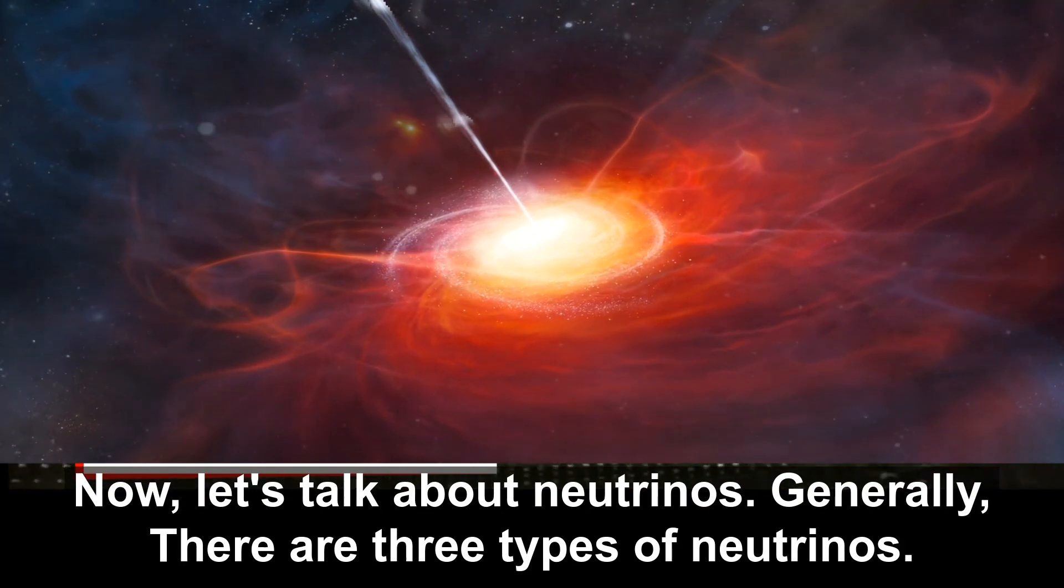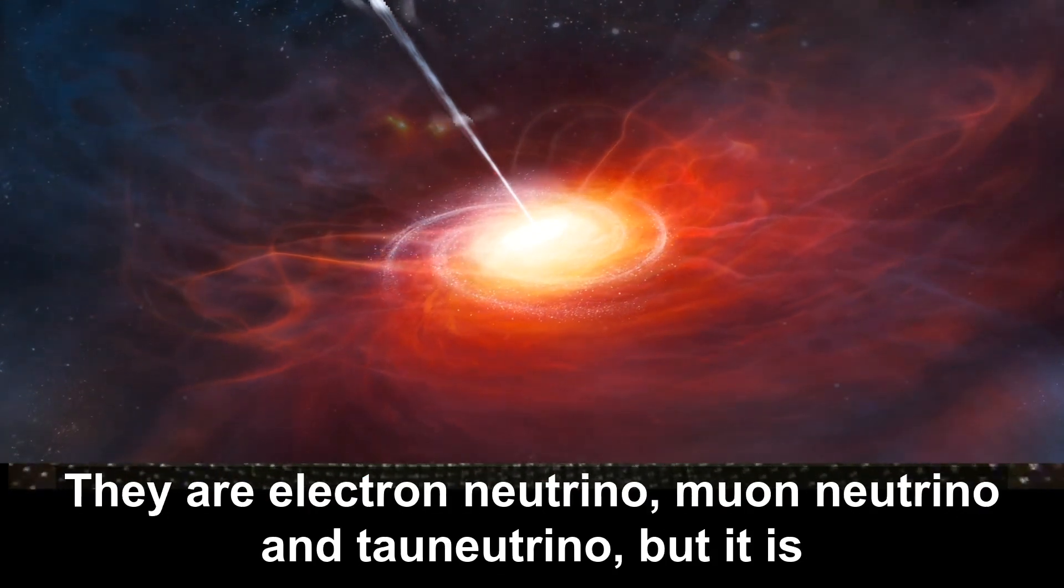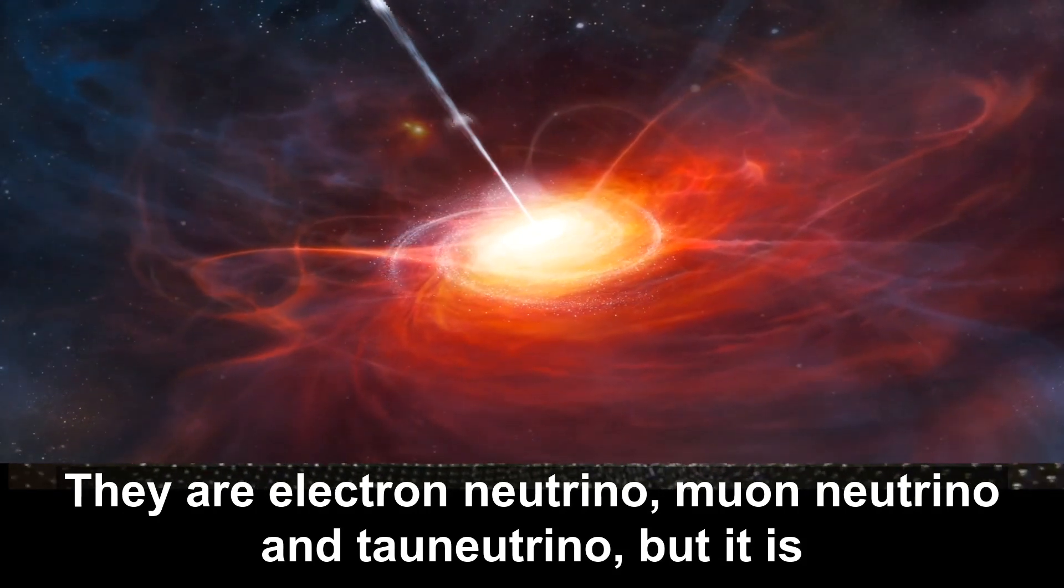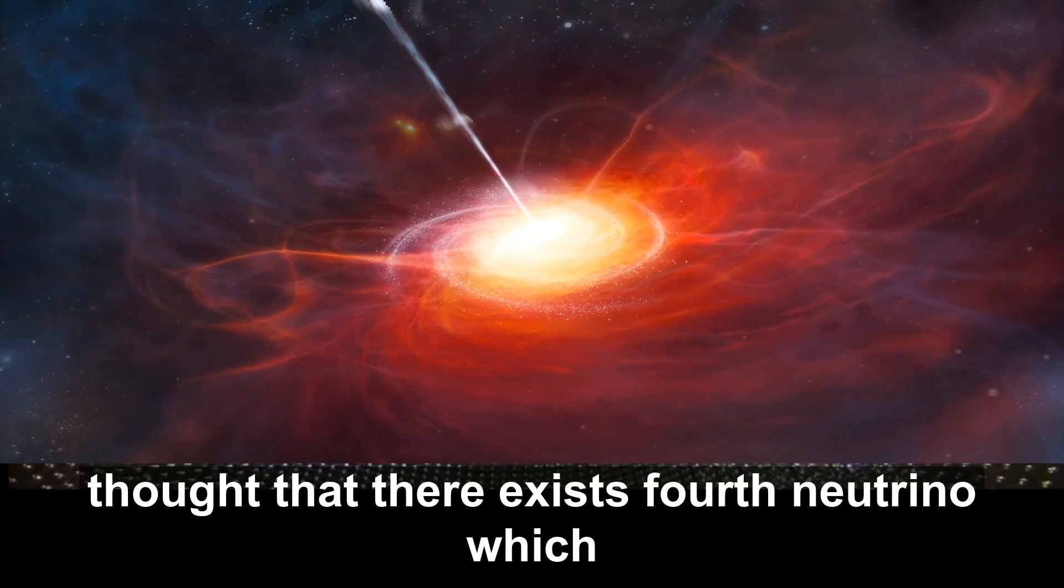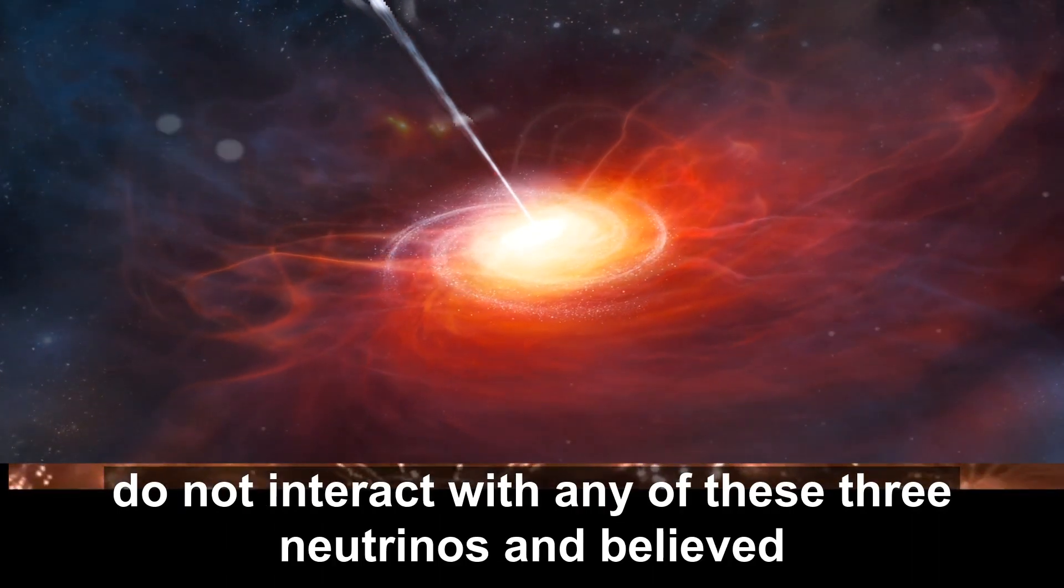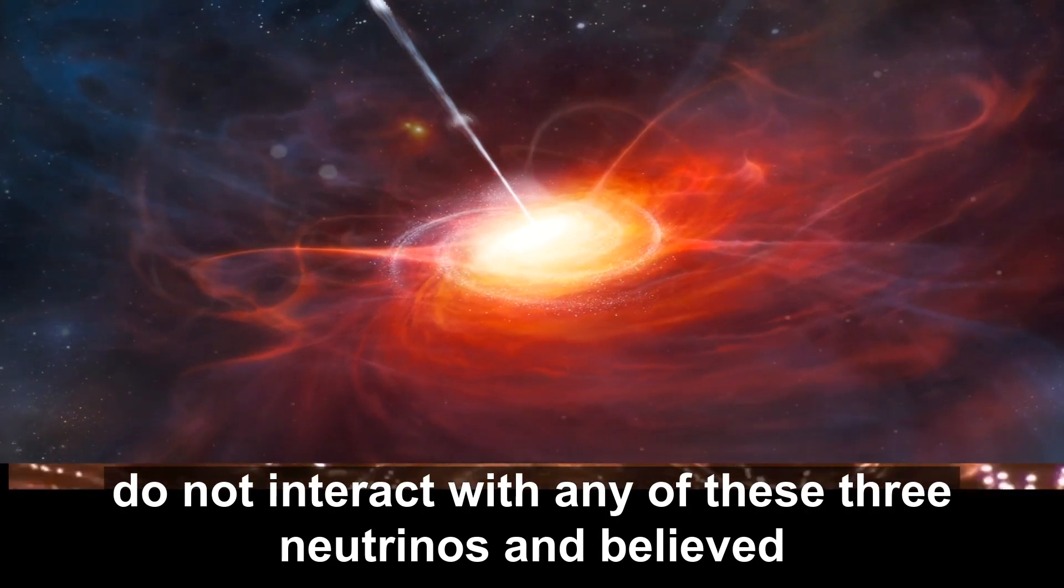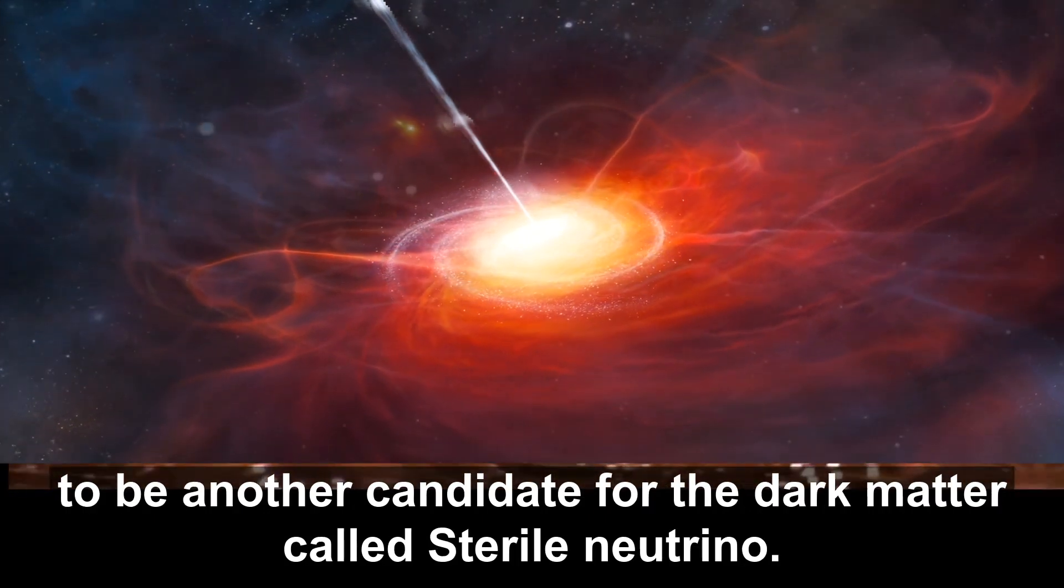Now let's talk about neutrinos. Generally, there are three types of neutrinos: Electron Neutrino, Muon Neutrino, and Tau Neutrino. But it is thought that there exists a fourth neutrino which does not interact with any of these three neutrinos and is believed to be another candidate for dark matter called the Sterile Neutrino.